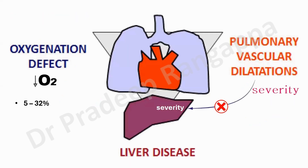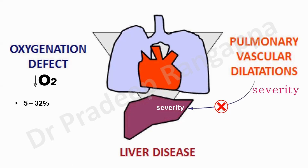Looking at the key components of hepatopulmonary syndrome: there is underlying liver disease, pulmonary vasculature dilatation, and an oxygenation defect — these are the three components. The right-to-left shunts lead to hypoxemia, and the occurrence rate of hepatopulmonary syndrome is 5 to 32%. Importantly, the severity of these shunts does not necessarily correlate to the severity of the underlying liver disease. Mild liver disease can present with severe HPS, and there is no linear correlation between cirrhosis severity and hepatopulmonary syndrome severity.